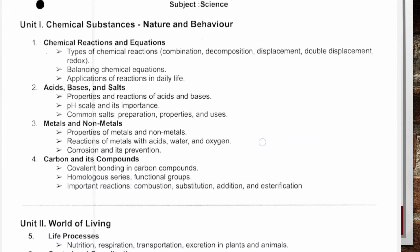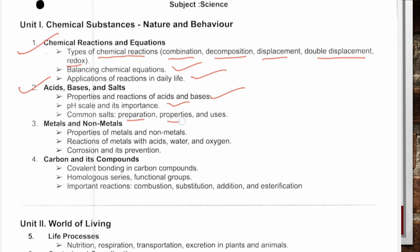Now for Science. Chapter Chemical Reactions and Equations: know the types of chemical reactions — combination, decomposition, displacement, double displacement and redox reactions — balancing chemical equations, and application of reactions in daily life for competency-based questions. Chapter Acids, Bases and Salts: properties and reactions of acids and bases, pH scale and its importance, common salt preparation, properties and uses. Chapter Metals and Non-metals: properties of metals and non-metals, reaction of metals with acid, water and oxygen, corrosion and its prevention.